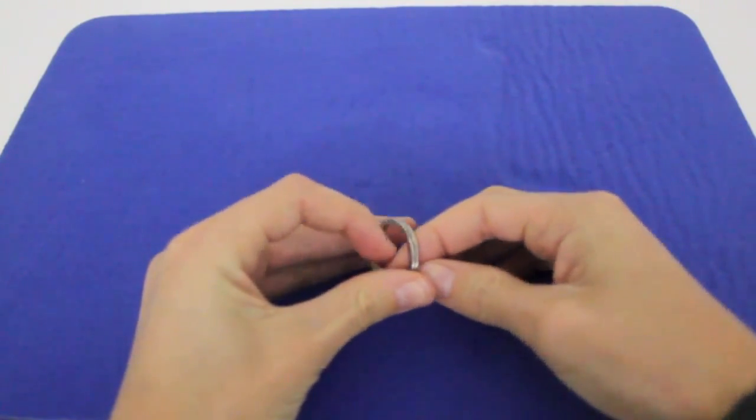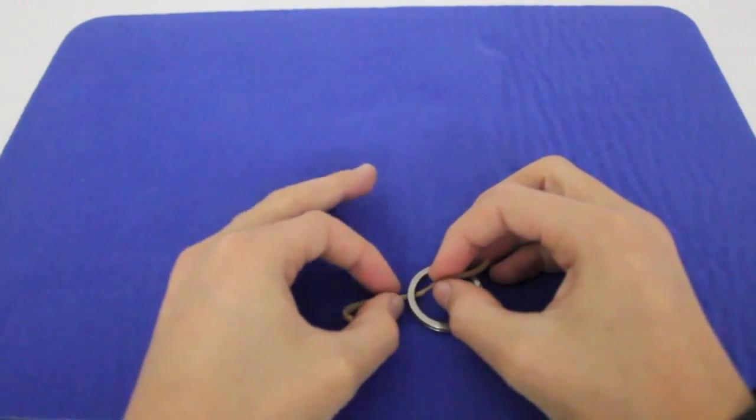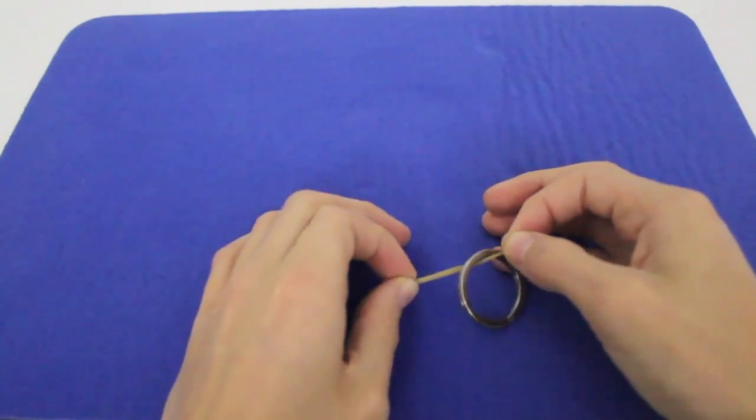So what you're going to do is when you put the rubber band through the ring, you're going to take like half of it on one side and the edge on the other side.